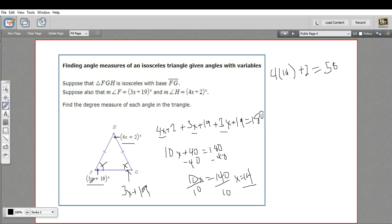And let's try this. 3 times 14 plus 19. I think that's going to be 61. And that's the measure for both the angle at f and the angle at g. So those are our angle measures for this isosceles triangle.